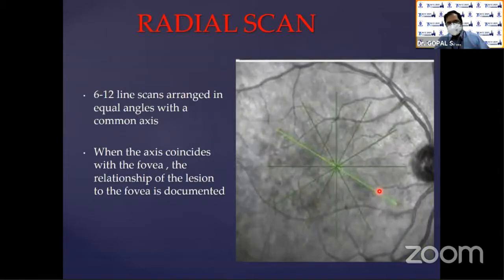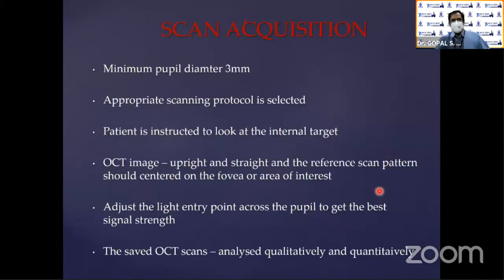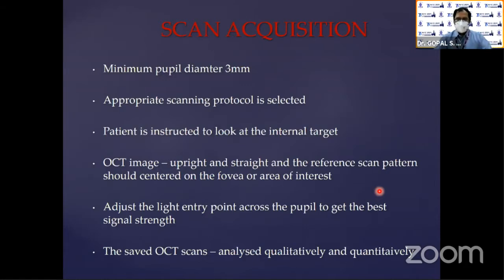You can also have radial scans, which are more for screening, and a 3D scan — either six by six or seven by seven — and in new machines it can go up to 12 by 12. For scan acquisition, you should have a reasonable pupil diameter of approximately three millimeters or more. The appropriate scanning protocol is selected and the patient is instructed to look at the internal target.